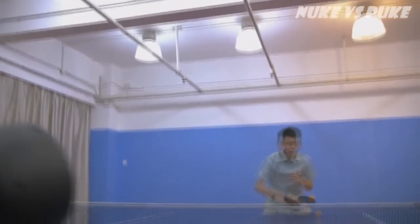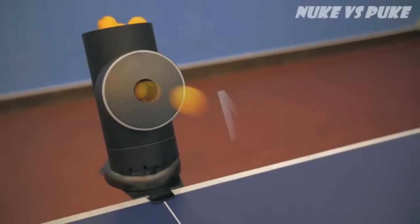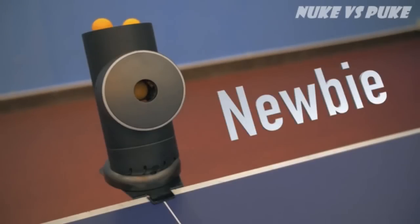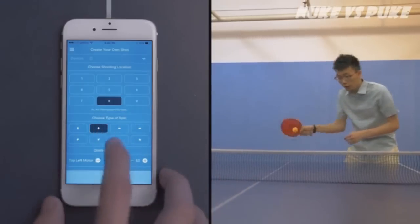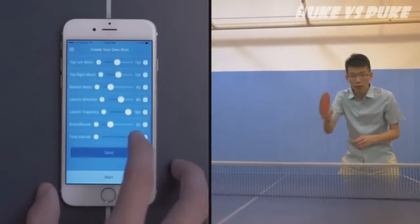TrainerBot lets you pick a setting that's perfect for you. Beginners can practice their forehand with slow, easy shots. Just choose the location, spin type, and the slow interval.